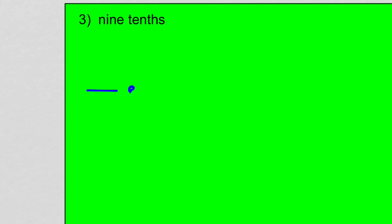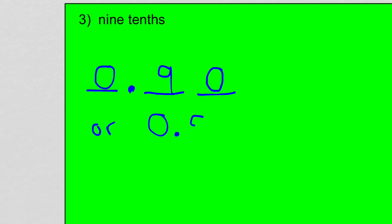So here we have a number written in words: nine tenths. Let's write this in standard form. Before we get ahead of ourselves, let's put a blank for the ones, a blank for the decimal, a blank for the tenths, and a blank for the hundredths. I don't have any wholes, so zero. I have nine tenths, so nine. I don't have any hundredths, so I could write a zero in the hundredths — or I could just write this as zero and nine tenths. So I either have zero and 90 hundredths or zero and nine tenths — it's the exact same amount.